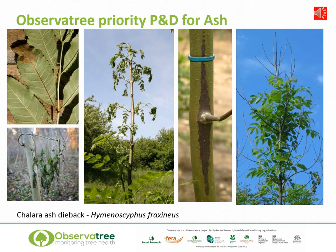Chalara ash dieback, often just called Chalara or ash dieback, is a fungal disease of ash trees. The disease was first recorded in the UK in 2012 and has since spread to most of the country. It infects trees of all ages. The fungus grows inside the tree, blocking the essential water and nutrient transport systems, and is often fatal. Chalara causes characteristic diamond-shaped lesions on the branches and stems of the trees, tending to form around the point where a shoot or branch joins the trunk. Other symptoms include wilting of the leaves and shoots and dieback of the branches. Later in the season, small white cup-shaped fruiting bodies of the fungus can be seen in the leaf litter around the base of the tree.